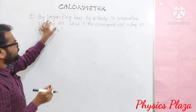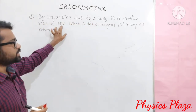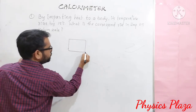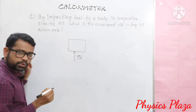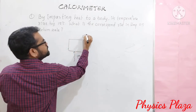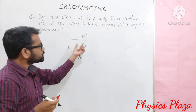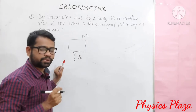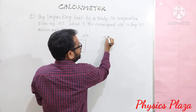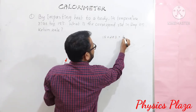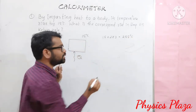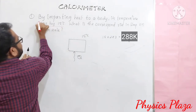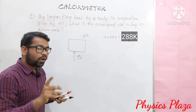Look at the first numerical. By imparting heat to a body, its temperature rises by 15 degrees Celsius. What is the corresponding rise in temperature on the Kelvin scale? Some children will make the mistake of adding 273, getting 288. But that is wrong, because here they are talking about the rise in temperature, not an absolute temperature.